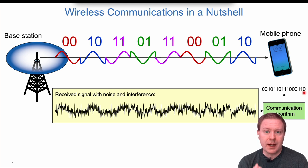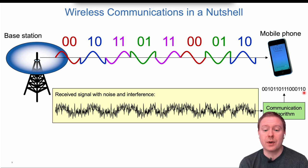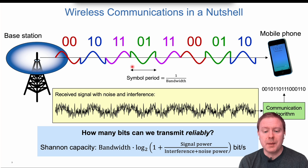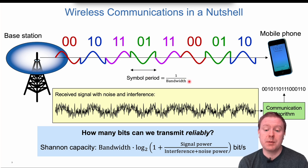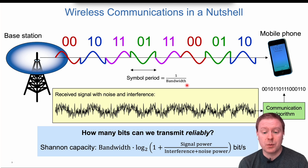The goal of communication engineering is to design algorithms that look at the received signal, take samples of it, and compute what was the original sequence of zeros and ones that were transmitted. One important factor is how much time it takes to send one of these symbols — one of these waveforms — which is inversely proportional to the bandwidth.